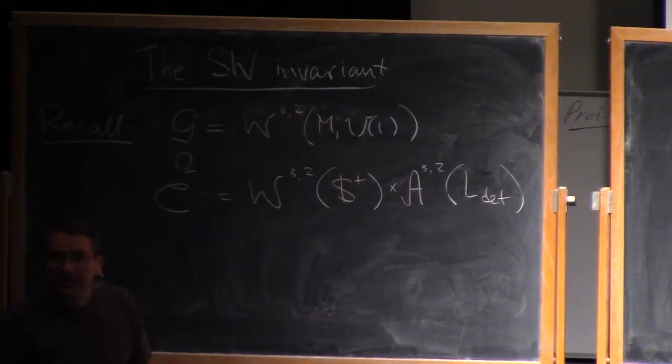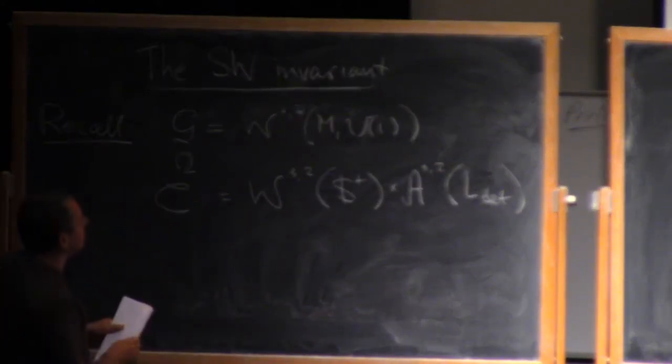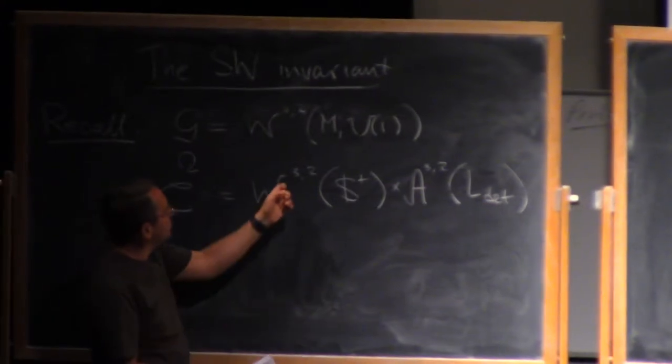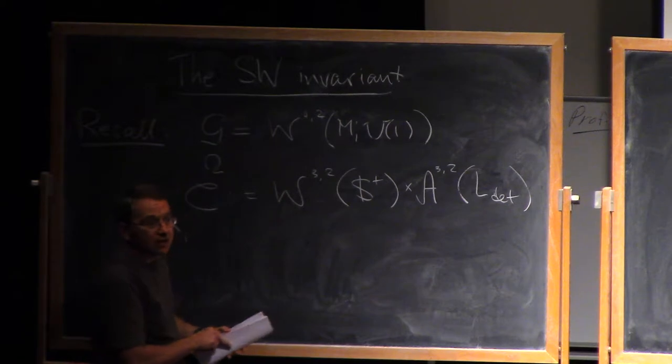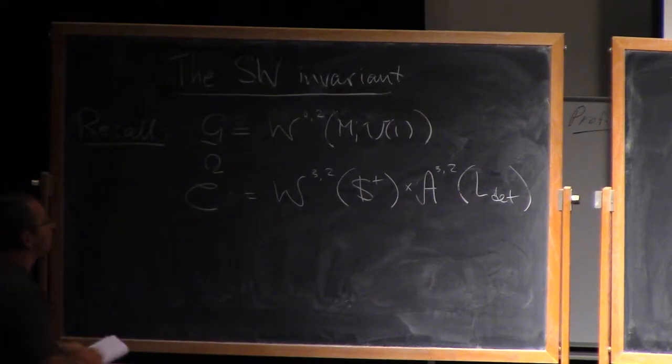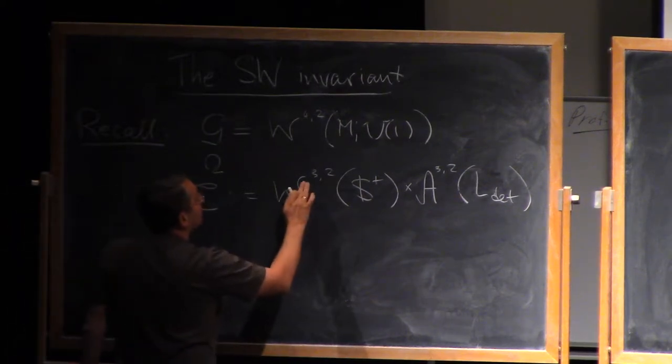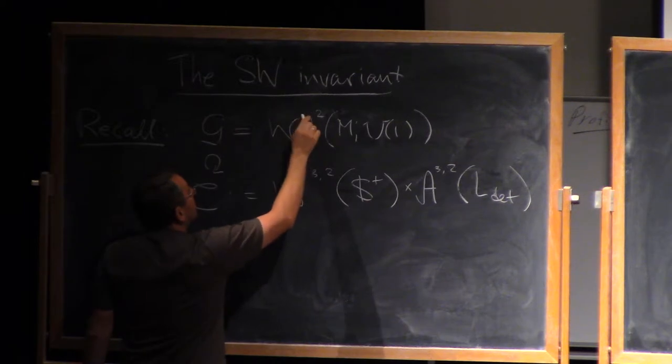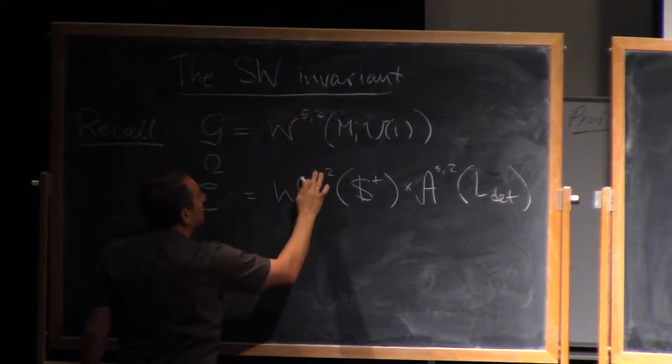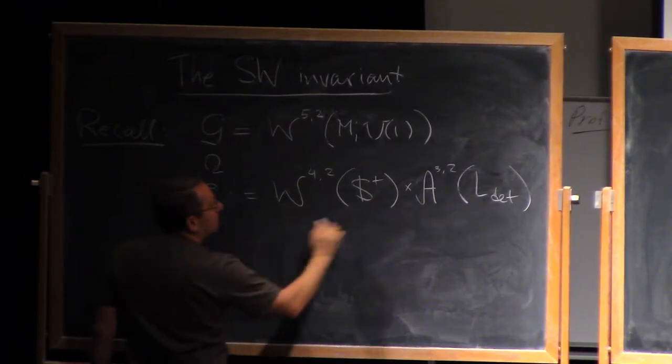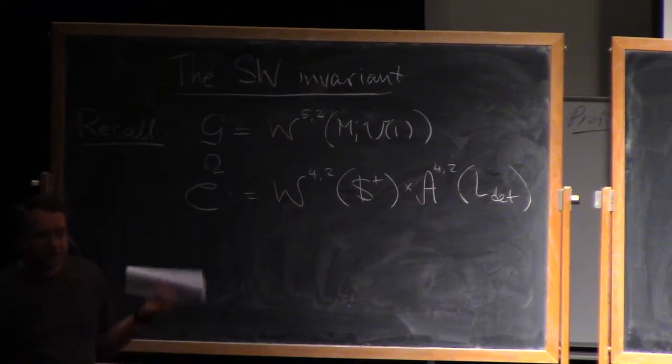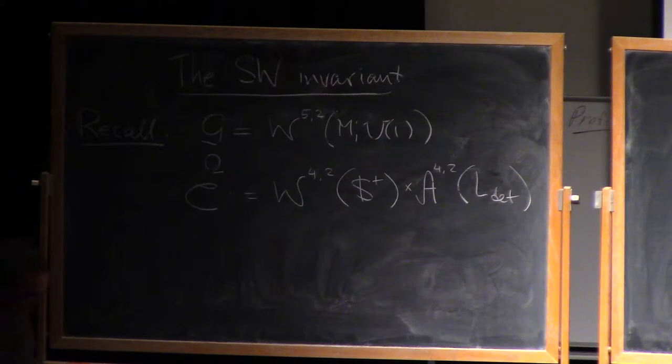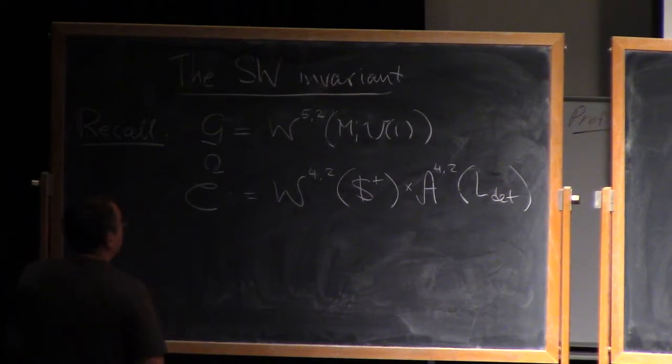As I discussed last time, it is not really important which degrees we take here. One of the arguments today will require a somewhat higher degree, so we will take here 5 and 4. But we could have fixed any k sufficiently large.